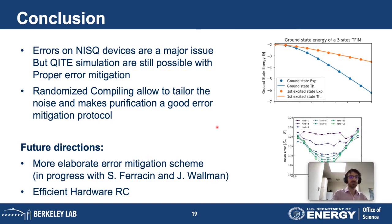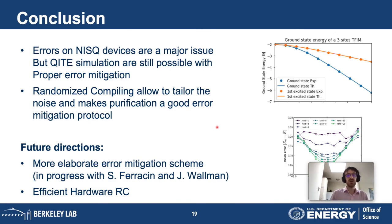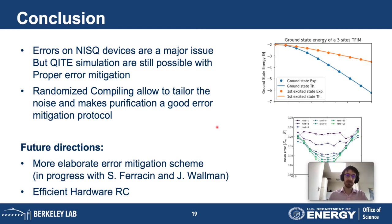For future directions: purification is a pretty simple and easy method of error mitigation. We are working with Samuel and Joel Wallman at Quantum Benchmark to use more elaborate mitigation schemes. We are also working with Gang, Yiling, and LBNL to have more efficient hardware implementations of randomized compiling.